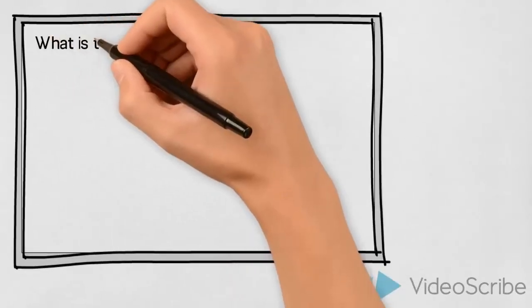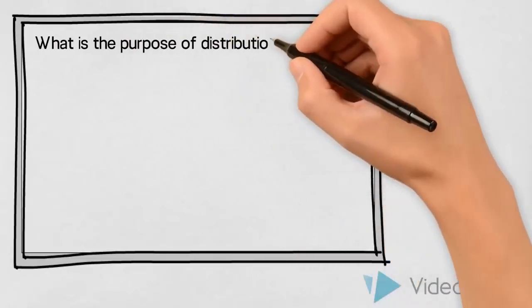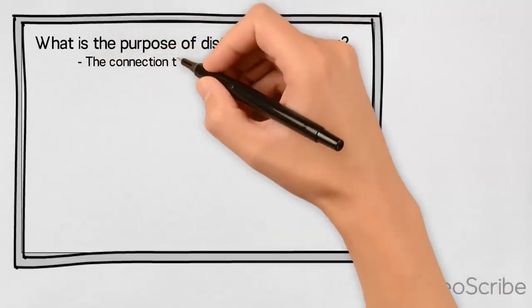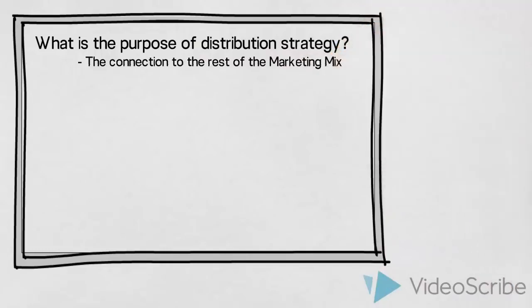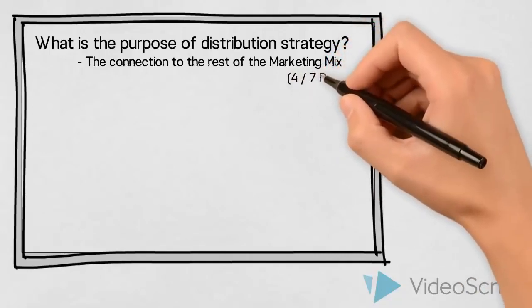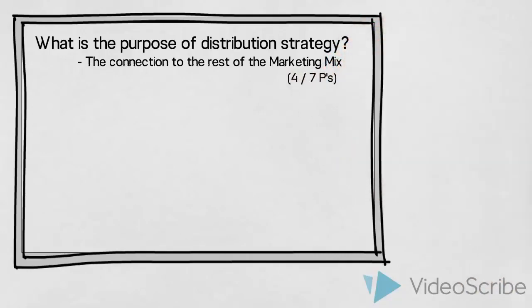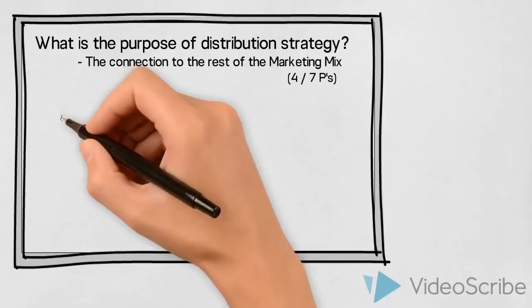What is the purpose of distribution strategy and what is the connection to the rest of the marketing mix? When you are asked to design the marketing mix, you need to make decisions on four or seven core elements, also known as the four or the seven P's.